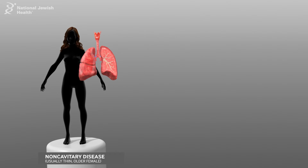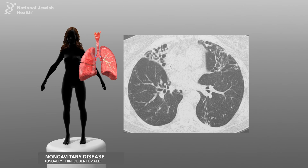In patients with noncavitary disease or nodular bronchiectatic disease, radiographic abnormalities are frequently found in the right middle lobe and lingula. These are characterized by bilateral bronchiectasis with clusters of small, usually less than five millimeter, nodules described as tree-in-bud densities.